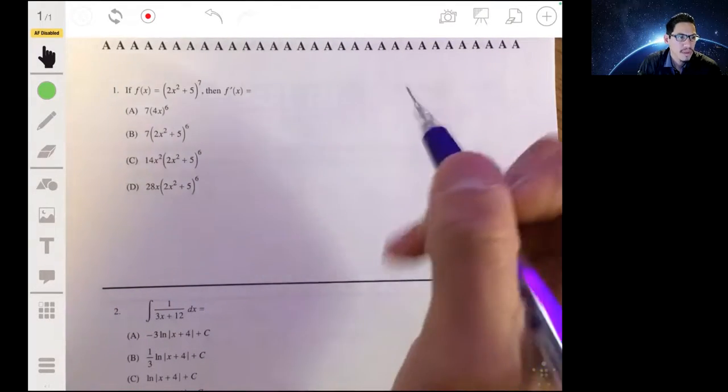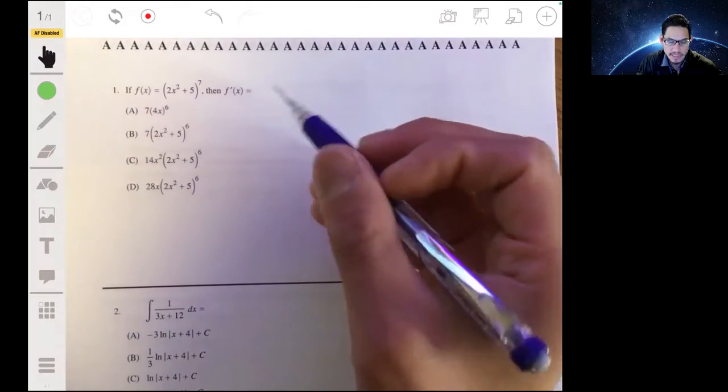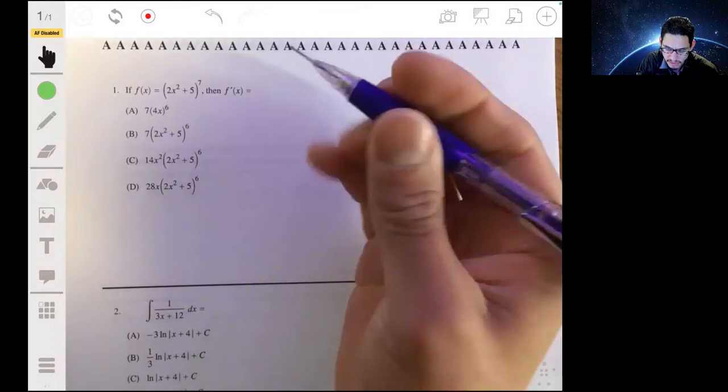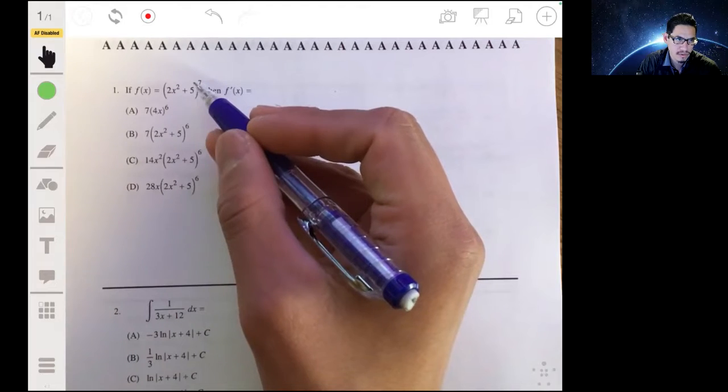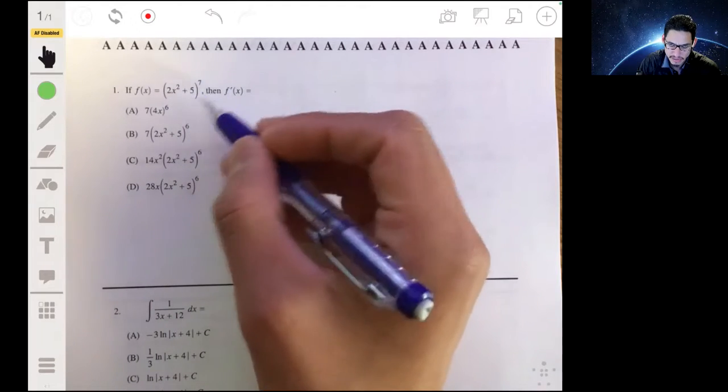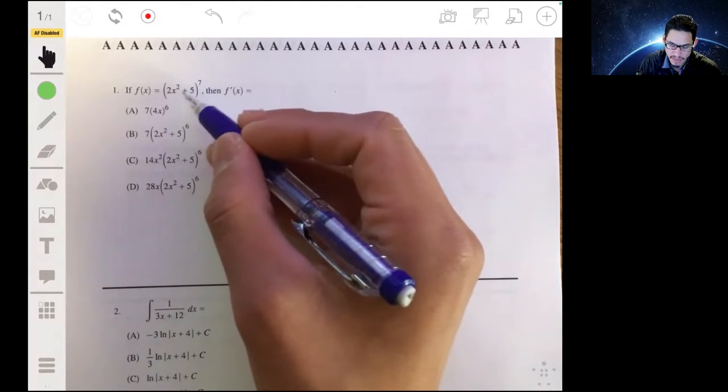Okay, so for problem one, if we want to find f prime of x, this basically is going to involve using the chain rule. So we're going to use the power rule, taking the derivative of the outside multiplied by the derivative of the inside.